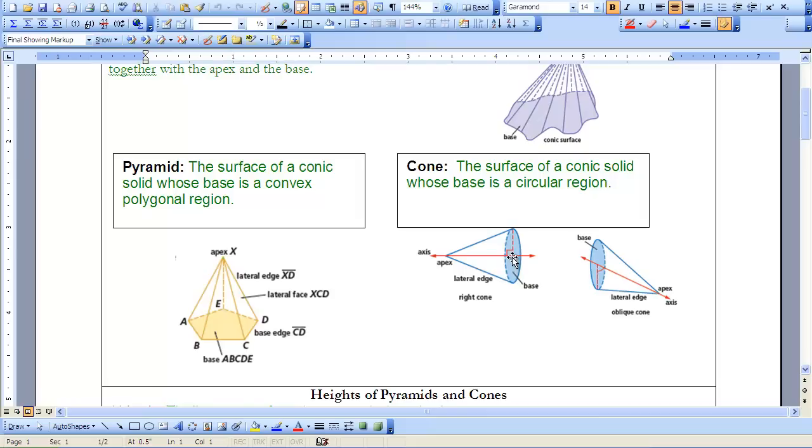The axis is where we go from the apex to the center of the base. When the axis is perpendicular to the base, that means we have a right cone. When it is not perpendicular, that means we have an oblique cone.